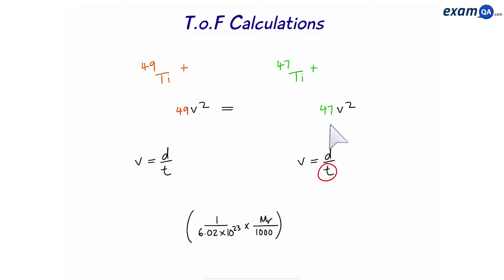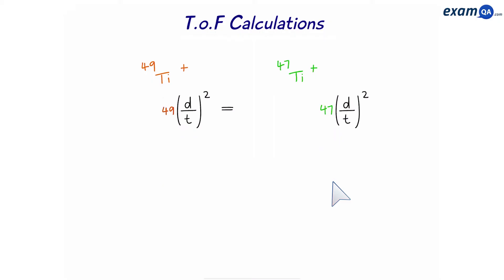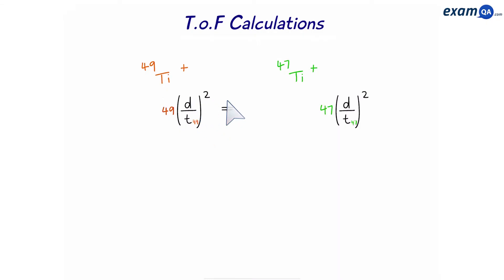Since we want to work out time, we substitute velocity with distance over time. We now have time of 47, time of 49, and distance. In this method we haven't worked out distance. However, because the distance is the same on both sides, we can set it equal to 1 — this represents that the distance cancels out between left and right.